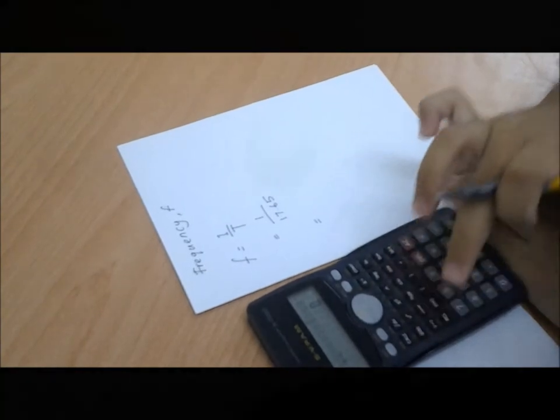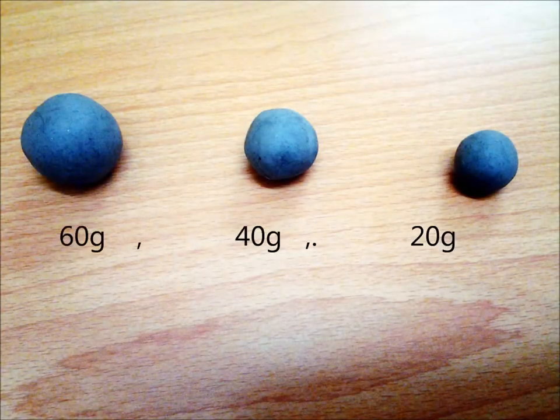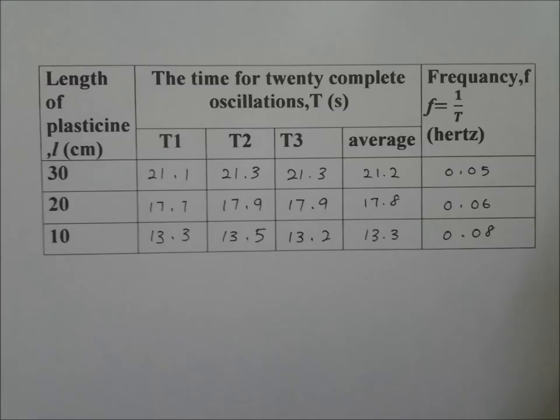The frequency of the plasticine swing is calculated by using this formula: f equals 1 over t. The experiment is repeated by using different masses: 40g and 60g. The data are collected.